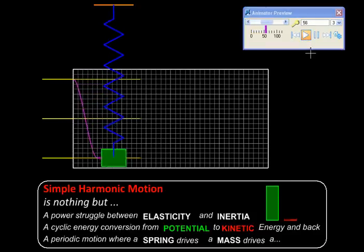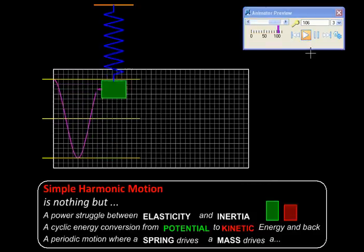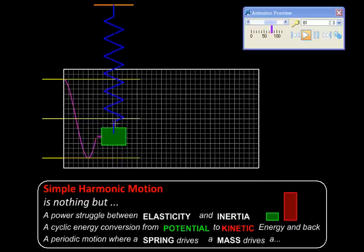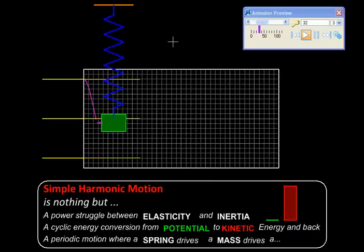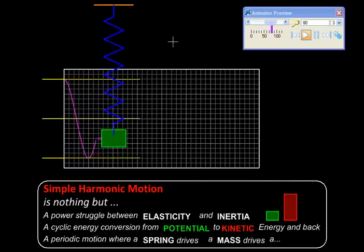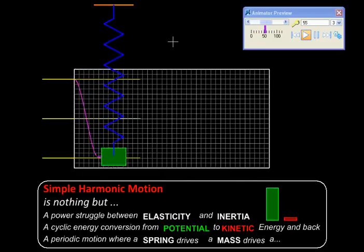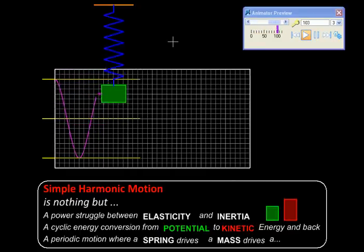Of course, in real life there is nothing like a pure spring without mass, and there is nothing like a pure mass without springiness or elasticity. Therefore, every physical body that we encounter has some amount of elasticity and some amount of inertia with it.